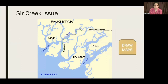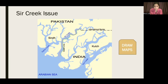Sir Creek is a region between Pakistan and India, separated from the Indian state of Gujarat. It is a tributary of the Indus River where there is no clear land border to determine a boundary between the two states.